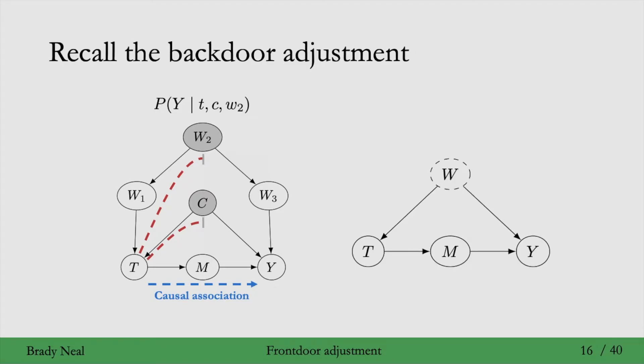But what about this graph, where W is unobserved, so we can't condition on W here? We can't block that backdoor path. Can we still identify the causal effect of T on Y if this is the causal graph and we haven't observed W? It turns out that we can using the frontdoor adjustment.